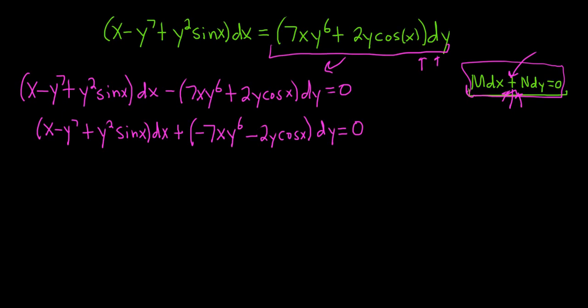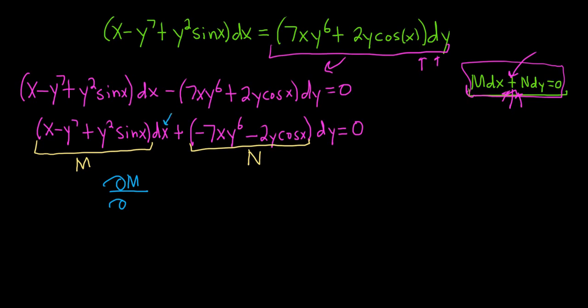Now we have it in the form we want. This piece in yellow is M, and this piece in yellow is N. To check to see if something is exact, you compute two partial derivatives and see if they're equal. The first one is del M del y — a memory trick: M has an x, so you use y for the partial.